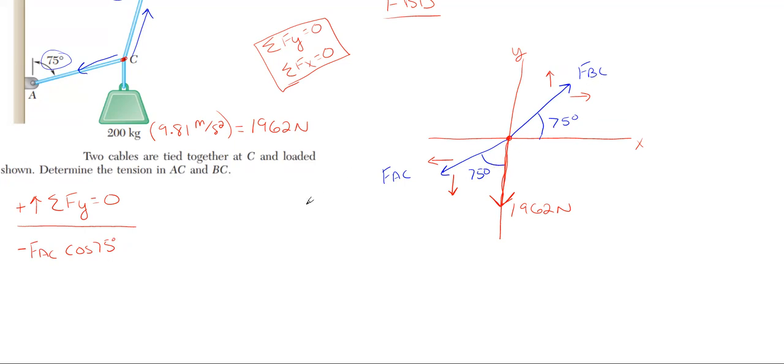And then looking at FBC, well, its component is in the upward direction, so positive FBC. And since the angle is off of the x, the y is opposite that angle, so that is sine. And then lastly, we have our minus weight of 1962, which is 100% in the y, so we don't need any cosine or sine. And that's all we have in the y direction, equal to zero.